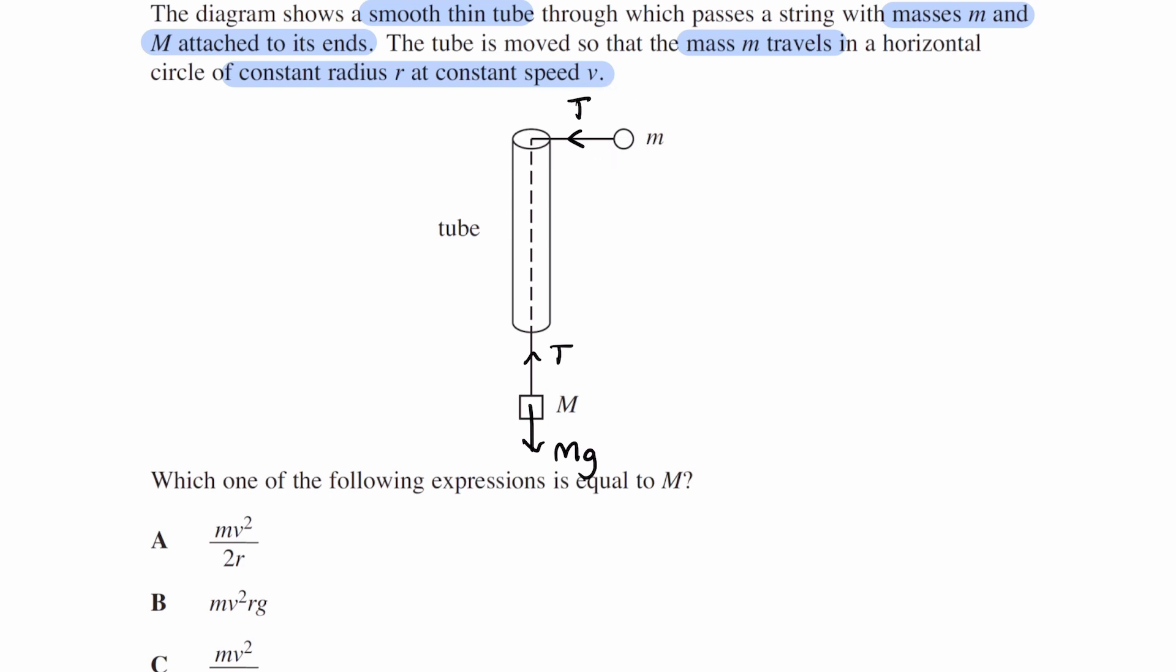So if that's the centripetal force, T is equal to mv squared over r. And from the diagram that we have over here, the force diagram, T must also be equal to Mg. It's in equilibrium, so this mass is not moving up or down, it's not accelerating. T will equal to Mg.